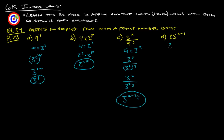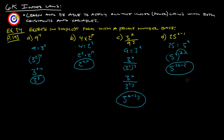Last part of Example 34: 25 to the x minus 1. Since 25 is 5 squared, that's (5 squared) to the x minus 1. You're going to distribute the 2 through to both terms: 2 times x gives 2x, and 2 times negative 1 gives negative 2. So the answer is 5 to the 2x minus 2.